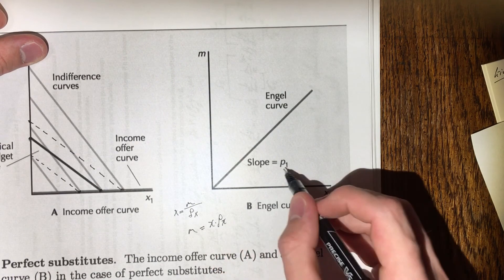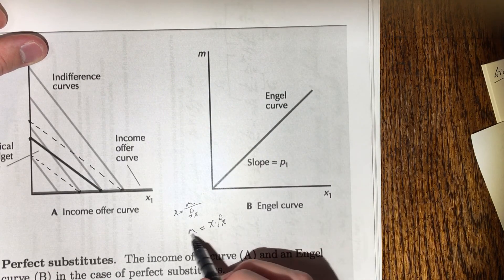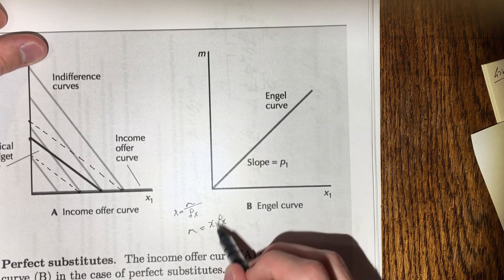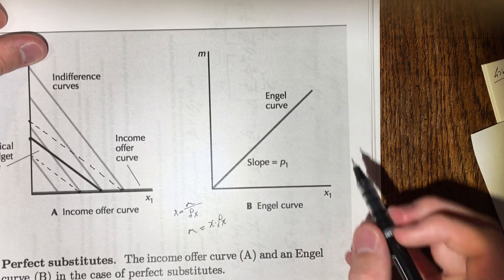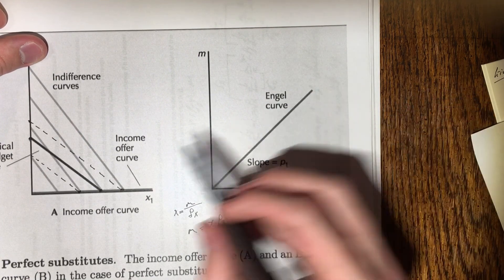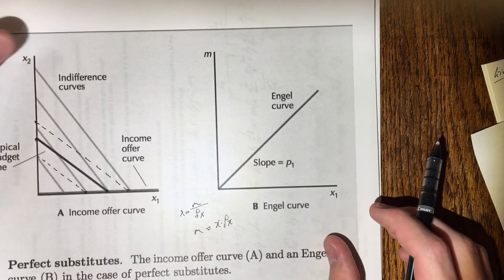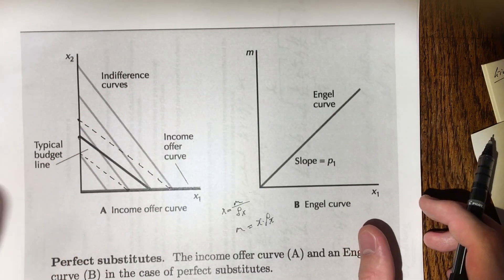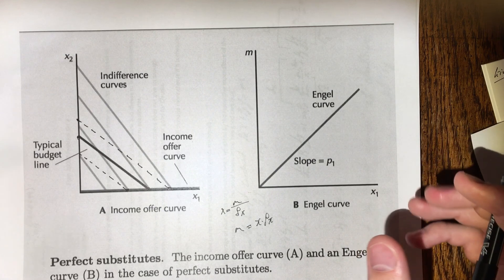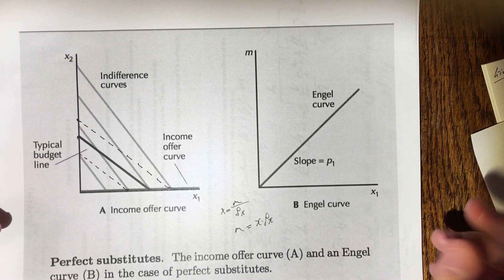Which means that the slope of this line, so m over x if we want to get in terms of m, because that's the y here essentially, it's equal to x times px, or p1 rather. So that's why here this is y equals x times a slope which is p1. Px and py are the same thing, so that's why the slope here of this Engel curve is p1. And this is an overview of the income offer curve on the left. So I hope that was helpful. This again is the graph on page 99 of the Varian textbook for the income offer curve of perfect substitutes.